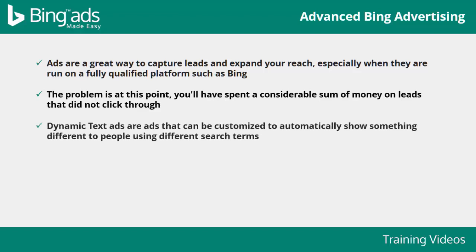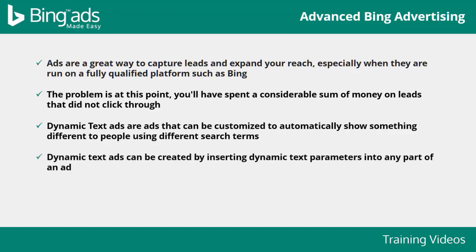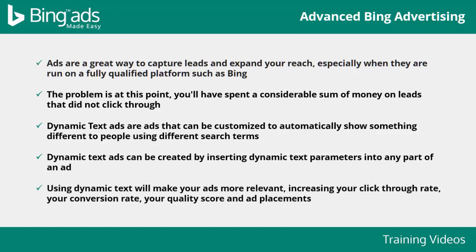Dynamic text ads are ads that can be customized to automatically show something different to people using different search terms. This is a great strategy because the same content will not work the same for different people looking for different things, even when they are related. Dynamic text ads can be created by inserting dynamic text parameters into any part of an ad. Dynamic text parameters are your keywords and parameters being triggered in your ads when people use them to make their searches. Using dynamic text will make your ads more relevant, increasing your click-through rate, your conversion rate, your quality score, and ad placements.